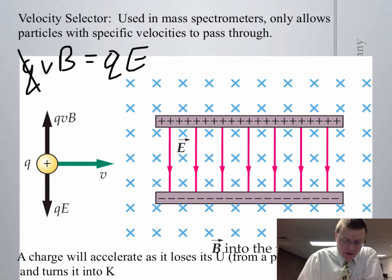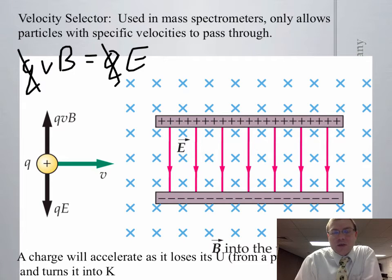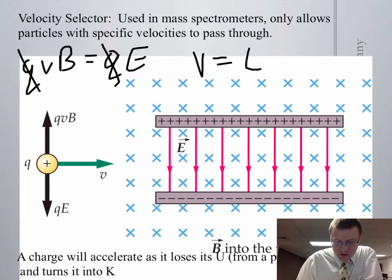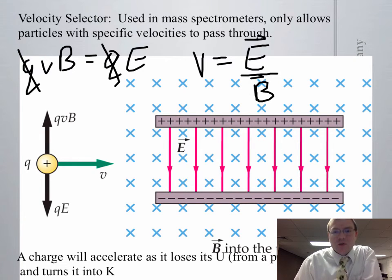So qvB must equal q times E, the electric field, and it means the velocity going through there doesn't depend on charge. The velocity only cares about two things: the electric field strength divided by the magnetic field strength. You know those two things and check your units. You should get meters per second in the end.